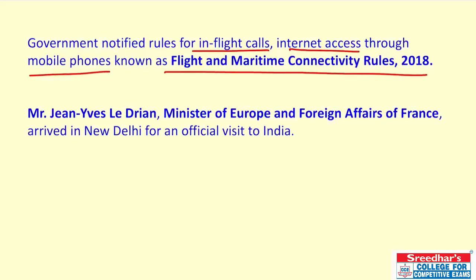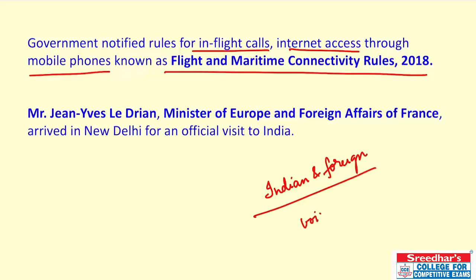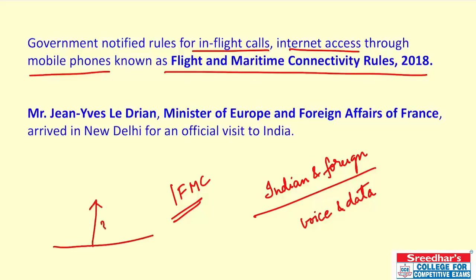The Flight and Maritime Connectivity Rules 2018 will allow Indian and foreign airlines and shipping companies to provide in-flight and maritime voice and data services. This shall come into force on the date of publication in the official gazette. IFMC (In-Flight and Maritime Connectivity) can be provided using telecom networks on ground as well as via satellites, and IFMC services will be activated once the aircraft attains a minimum height of 3,000 meters to avoid interference with terrestrial mobile networks.